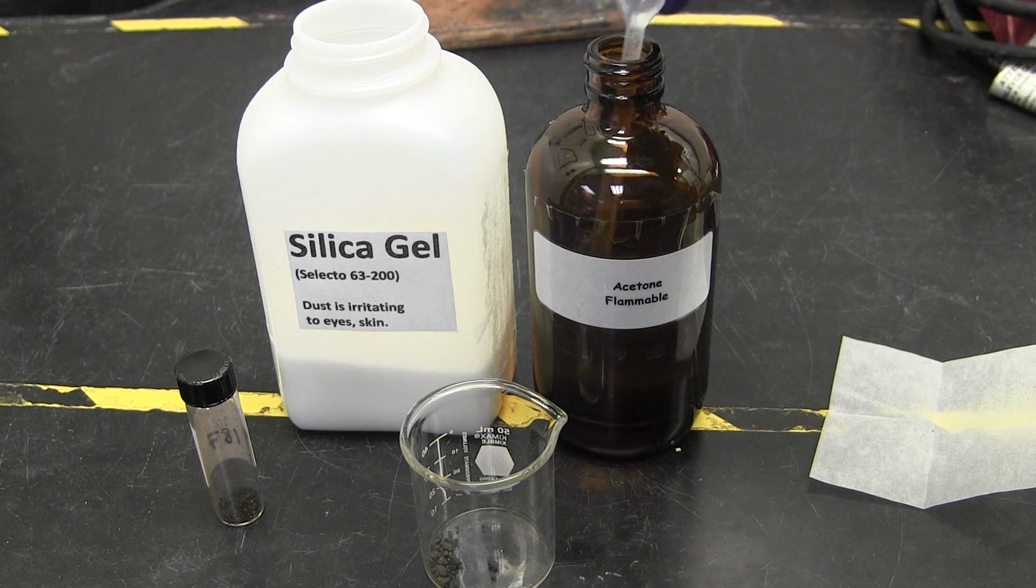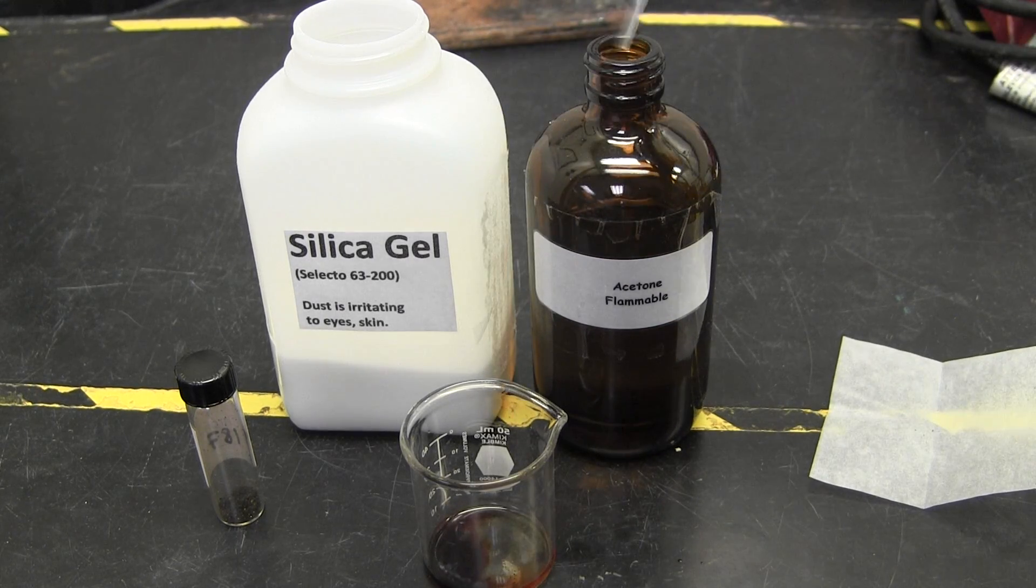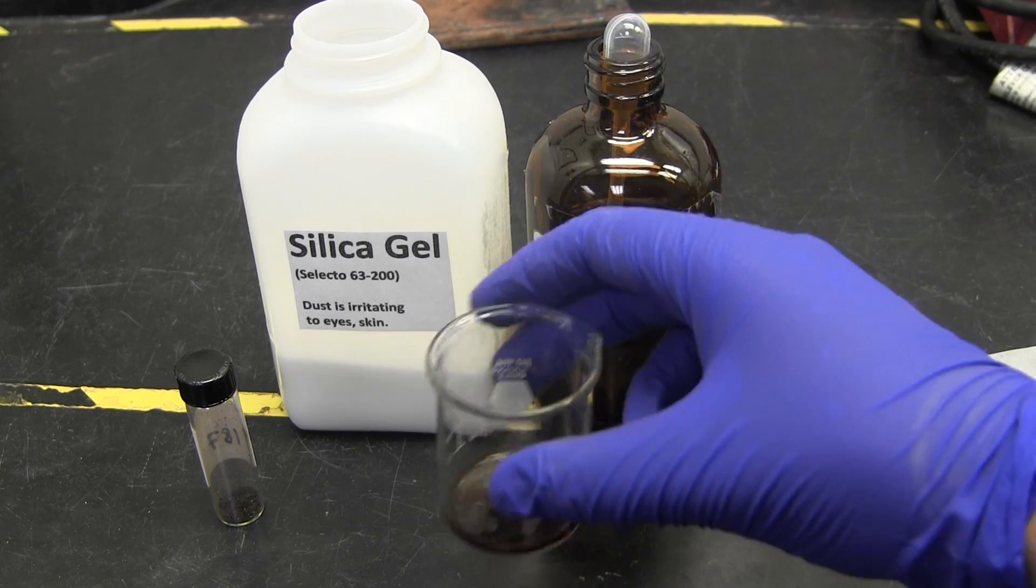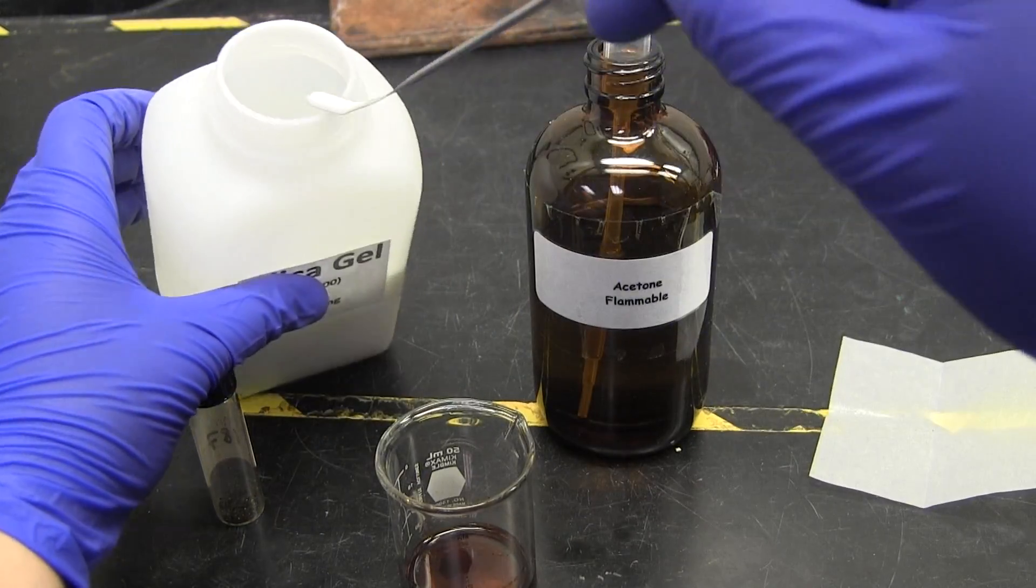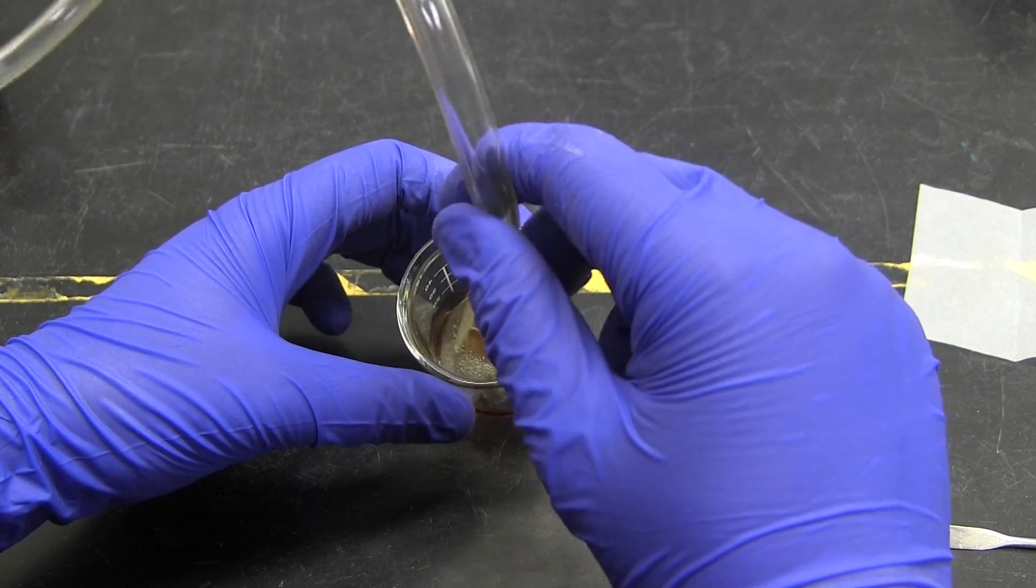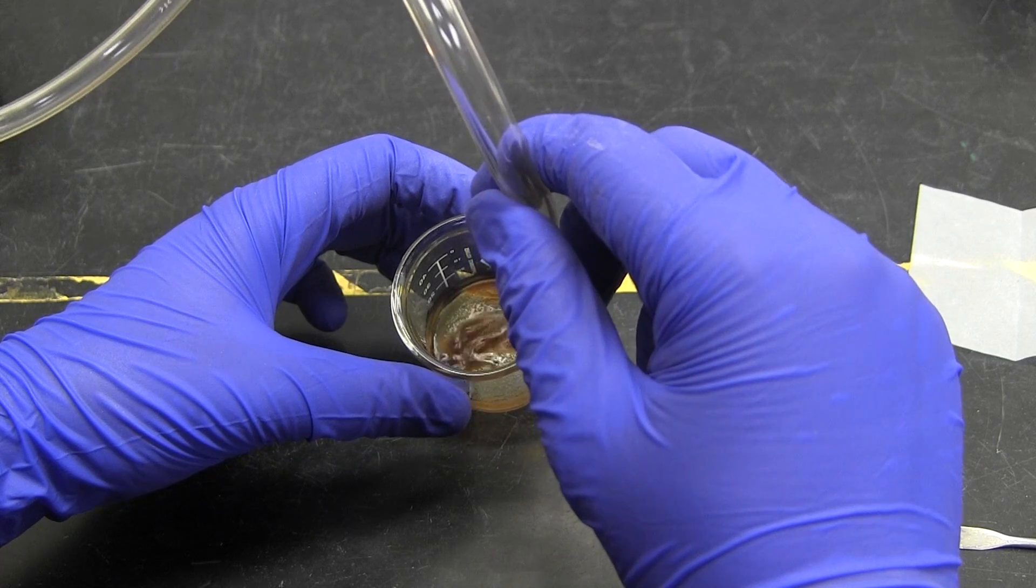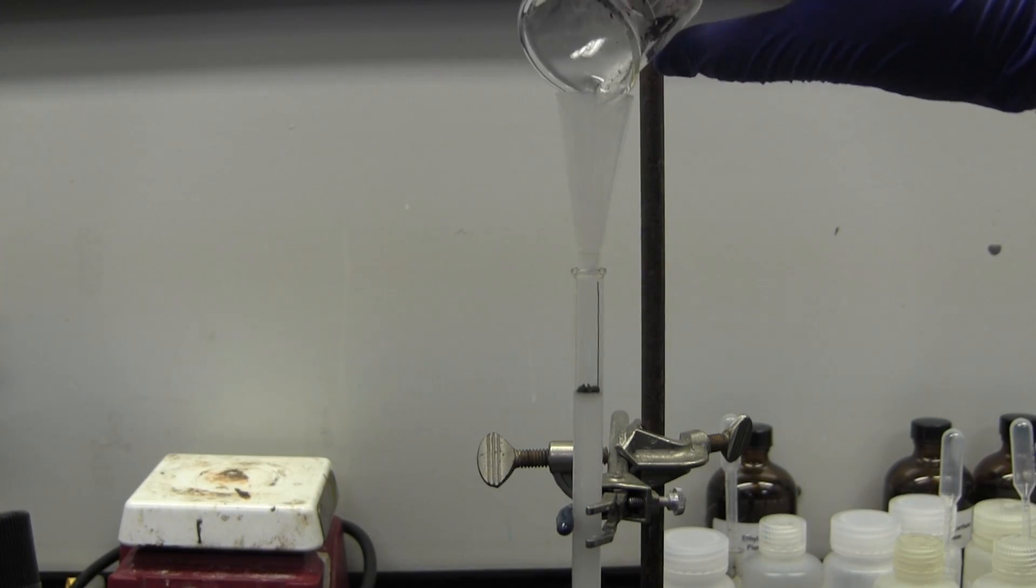Next, use the dry method procedure to load your sample onto your packed column. Do this by dissolving your unknown in a small amount of acetone. Mix this with a small scoop of dry silica gel and dry completely with nitrogen. Remember to evaporate with nitrogen gently or you will lose your unknown. Scrape this out of your beaker and add it to the top of your packed column.